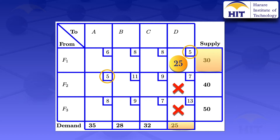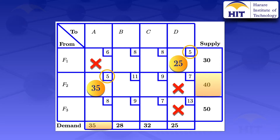We now move to the second five, which is at F2A. The supply is 40 and the demand is 35. We take the minimum of 35 and 40, which gives us 35, so we allocate 35 units there. This meets the demand requirements for destination A, so we cross out the remaining cells in that column — we can no longer allocate there.